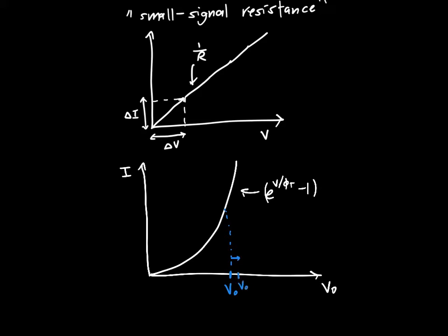Say V₀ plus delta V to V₀ minus delta V. Well then approximately within this region this looks kind of like a straight line. Not exactly, it's a bit of a stretch, but if the voltage is small this looks kind of like a straight line.